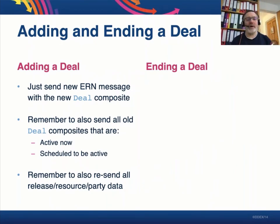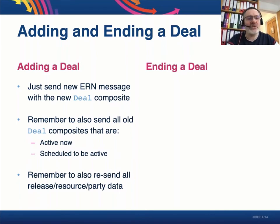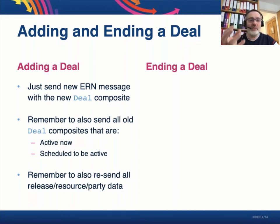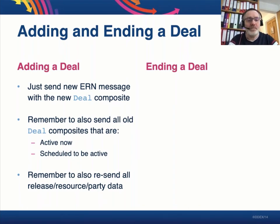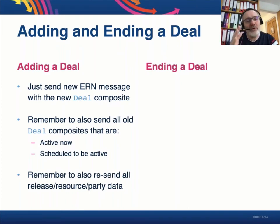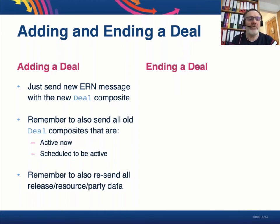Let's talk about deals and how to add and end a deal — it's actually very straightforward given what I've said already. You add a deal by simply sending that deal in a new ERN message. The record company looks at its own system, sees that a release needs a new deal, exports all release information, exports all existing deal information, includes the new deal, packages it up in a new ERN message, and sends that off. But you need to include all the old deals — at least all that are active today or will become active in the future. There is no need to include deals that have already expired.